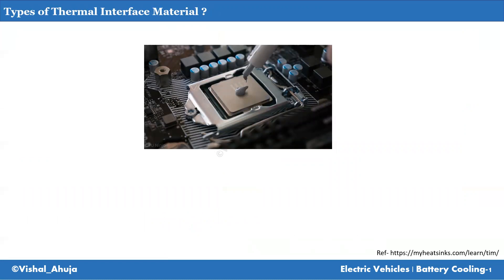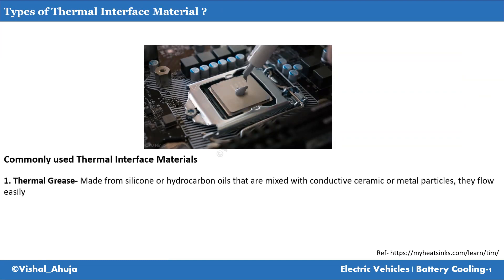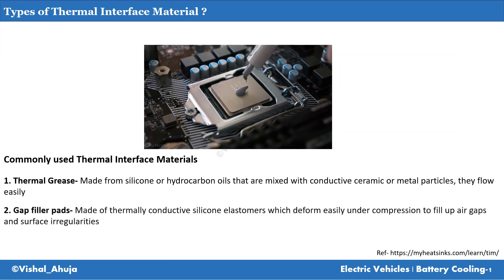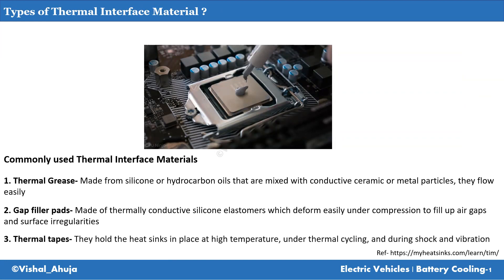What are the different kinds of interface materials available in the market? The first is thermal grease, which you might have seen applied on top of a CPU before attaching to the heat sink. It is made of silicon or hydrocarbon oils mixed with conductive ceramic or metal particles. It flows very easily to fill the irregularities and gaps. The second most popular is gap filler pads, made of silicone elastomers which deform easily under compression to fill air gaps and also absorb some vibrations in the system. Third is thermal tapes, which provide adhesion force between two joining surfaces and prevent relative movement.